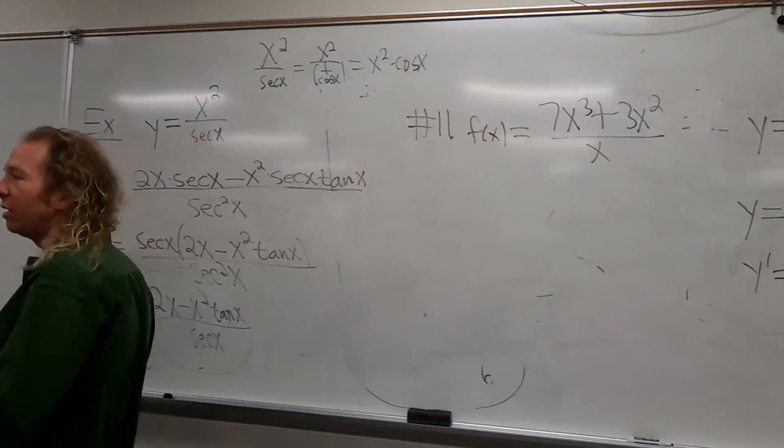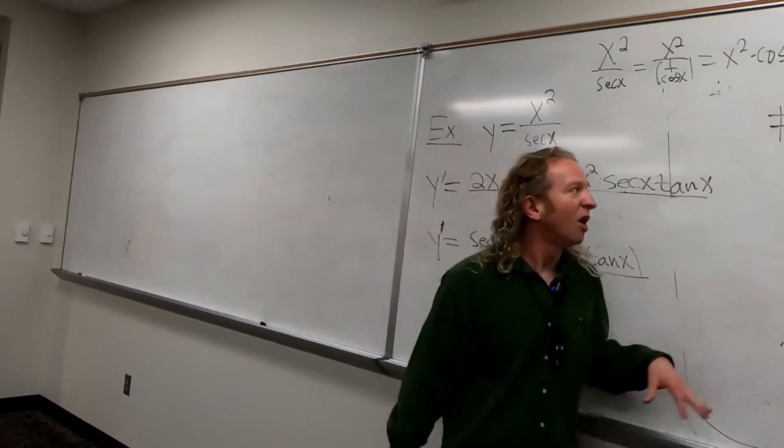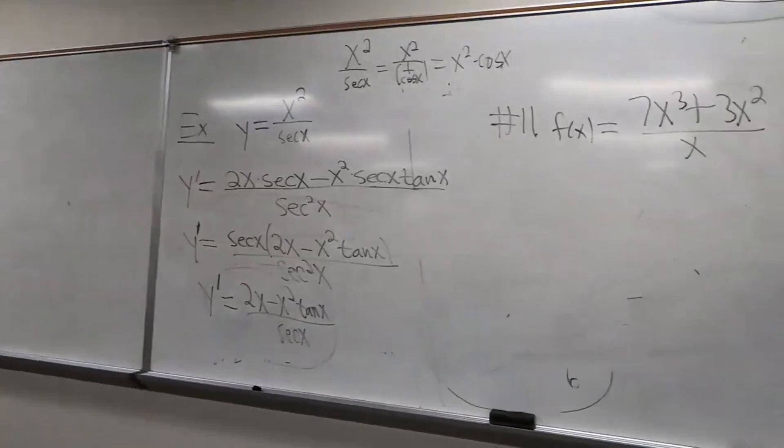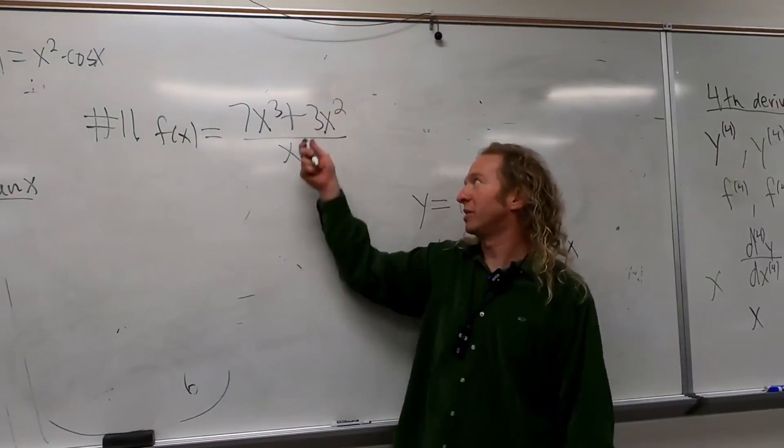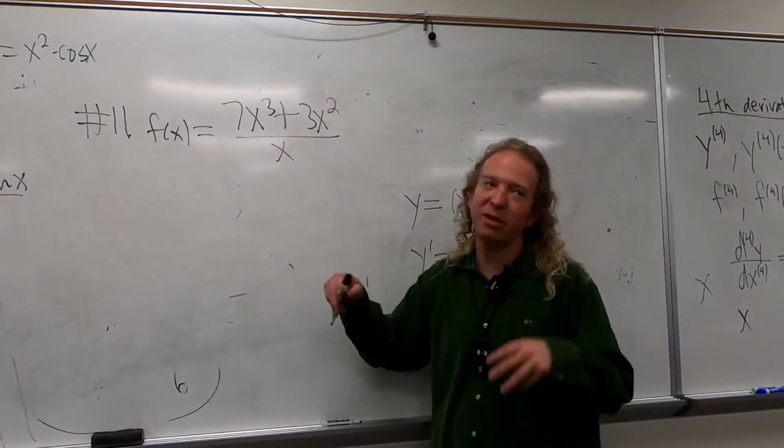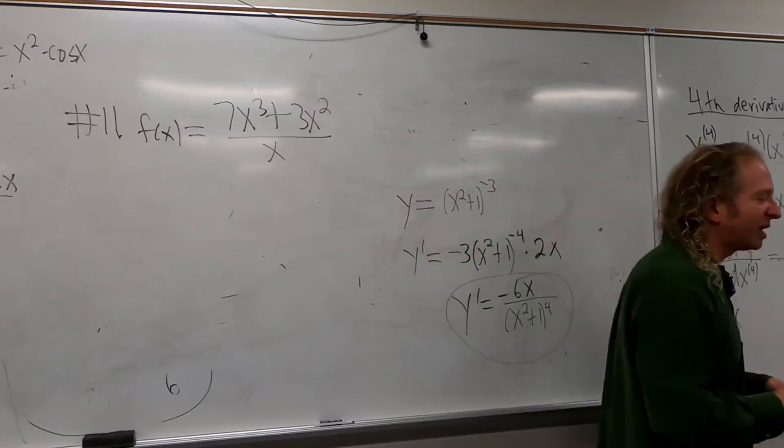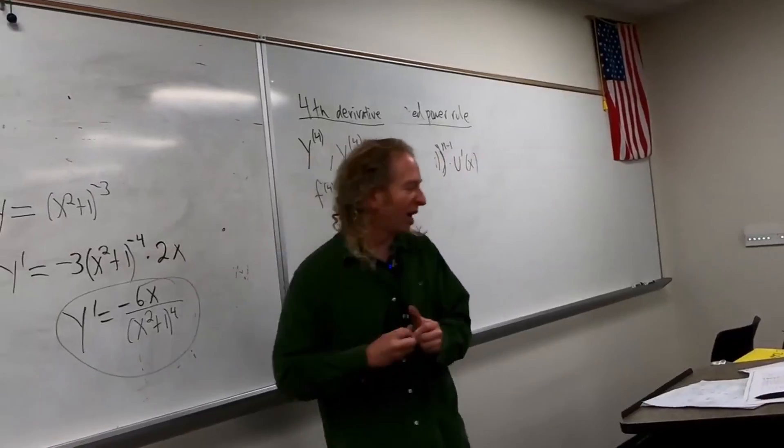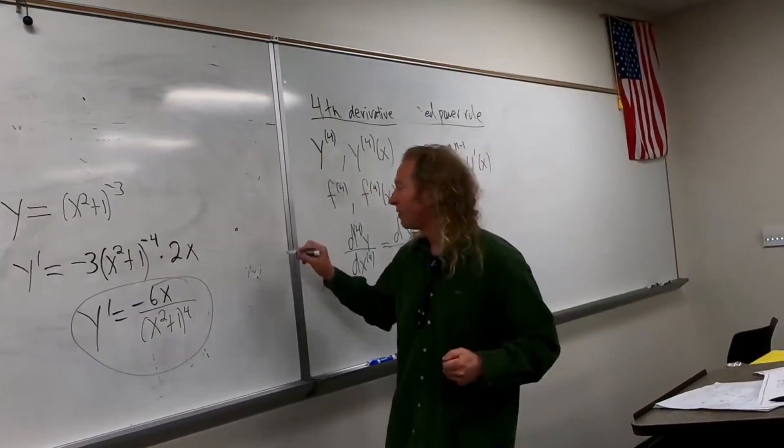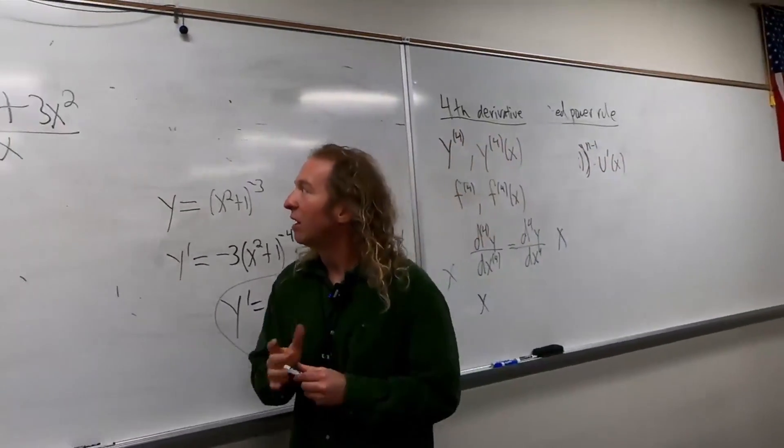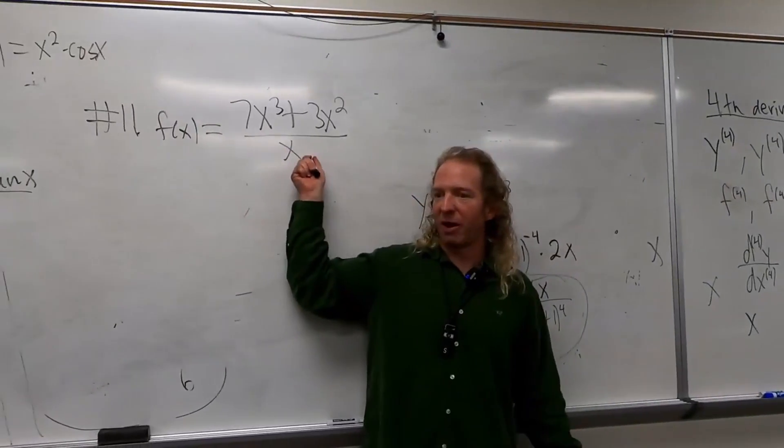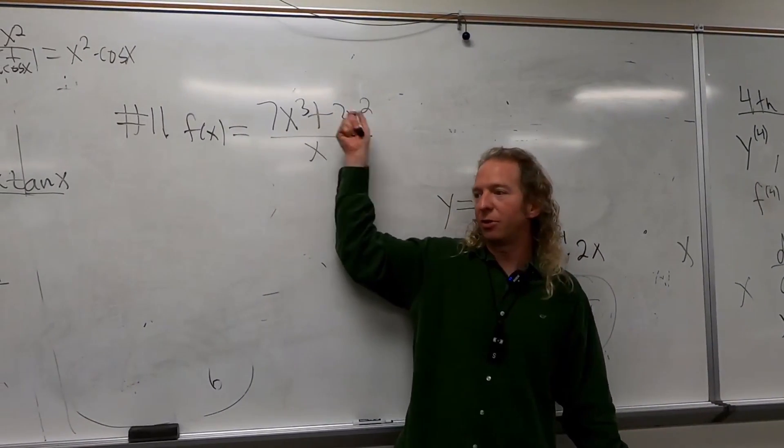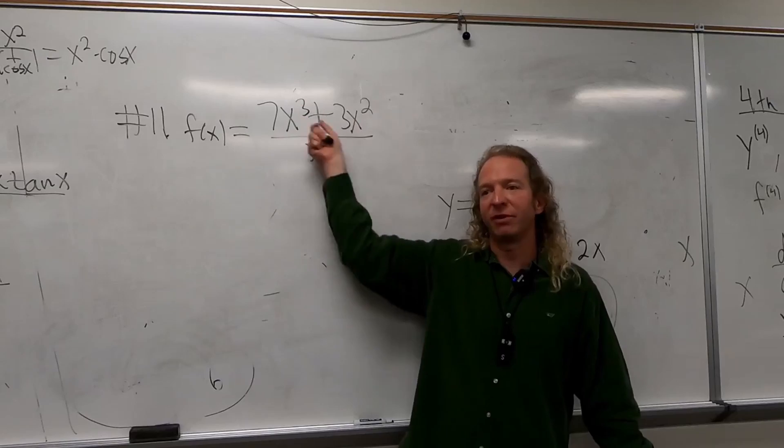So this one, you have variable over variable. When people are first learning calculus, they have a habit of always trying to bring things up. In theory you could do that, but it's just harder and it's typically not a good idea. In this case it'll work, but there is a more elegant and a more useful way to simplify this. Whenever you have a monomial on the bottom, so one term and two terms here, you can break this up and simplify it.